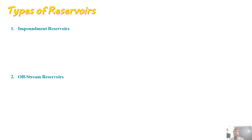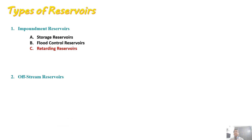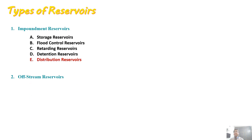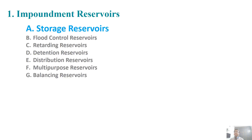There are two types of reservoirs. We can classify reservoirs into two types: the impoundment type of reservoirs and the off-stream type of reservoirs. The impoundment reservoirs are of these types: storage reservoirs, flood control reservoirs, retarding reservoirs, detention reservoirs, distribution reservoirs, multipurpose reservoirs, and balancing type of reservoirs. Let's see the explanation of these types.